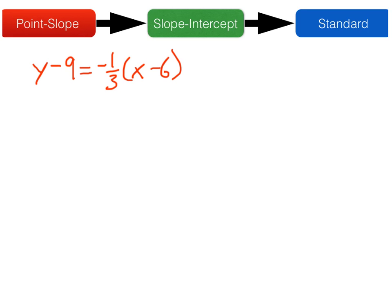First, I'll take the point and that perpendicular slope and put it into point-slope form. Next, we'll move towards slope-intercept form. The way we'll do that, first we'll distribute negative 1/3 times x, and negative 1/3 times negative 6.